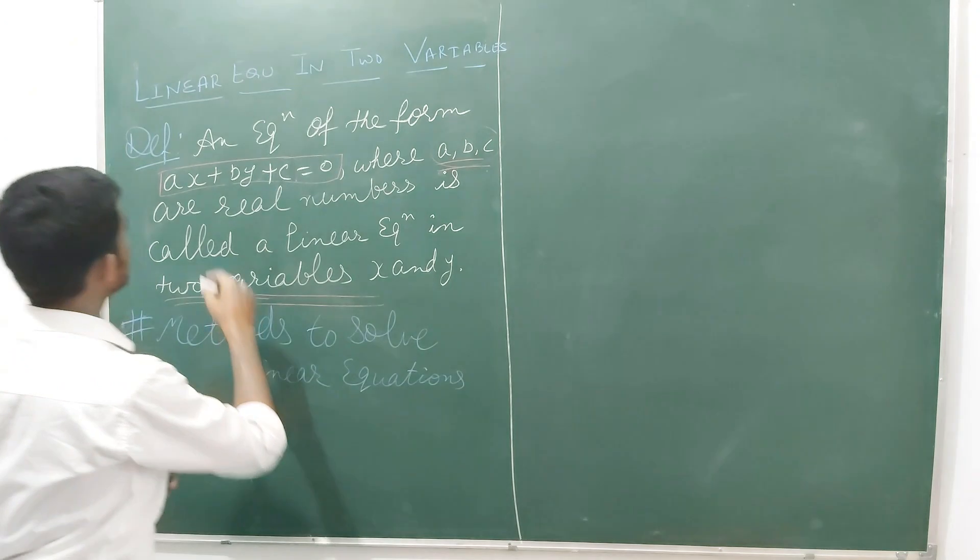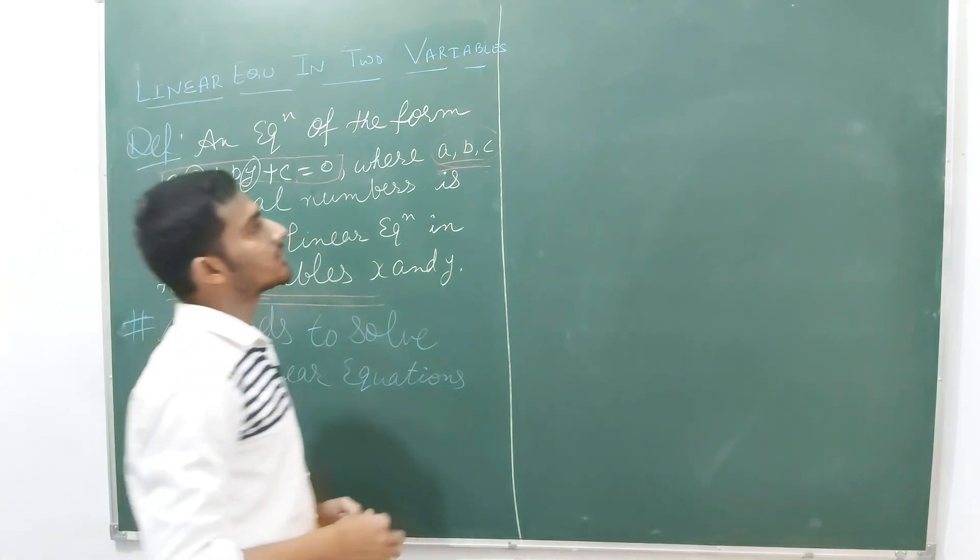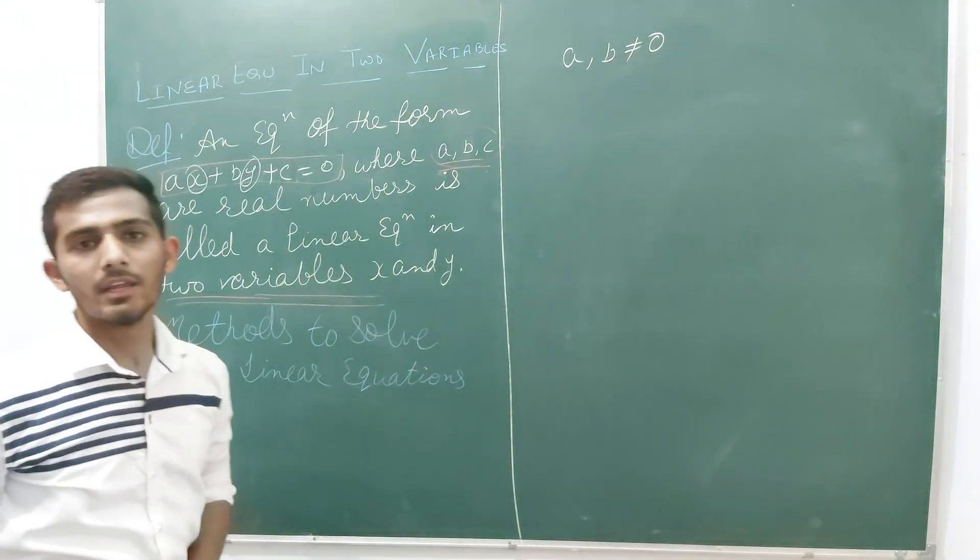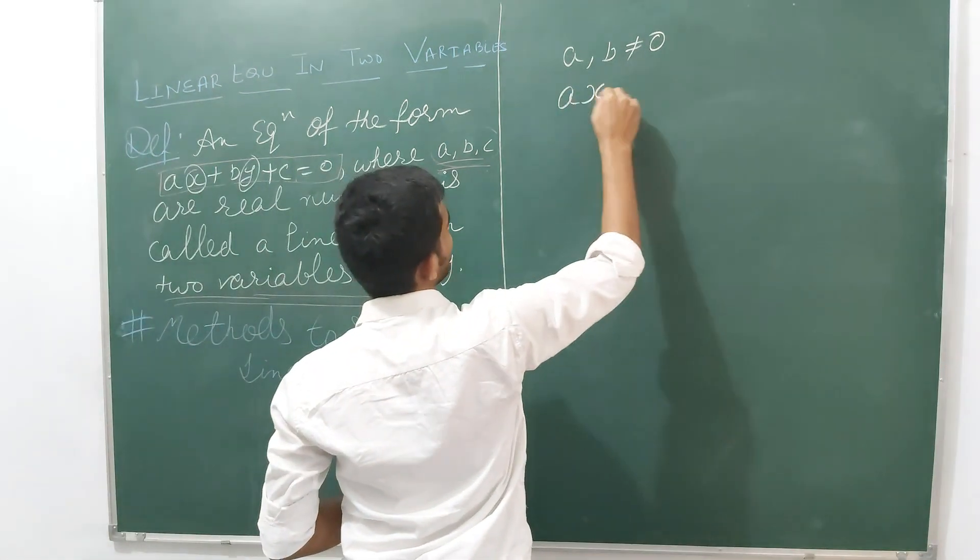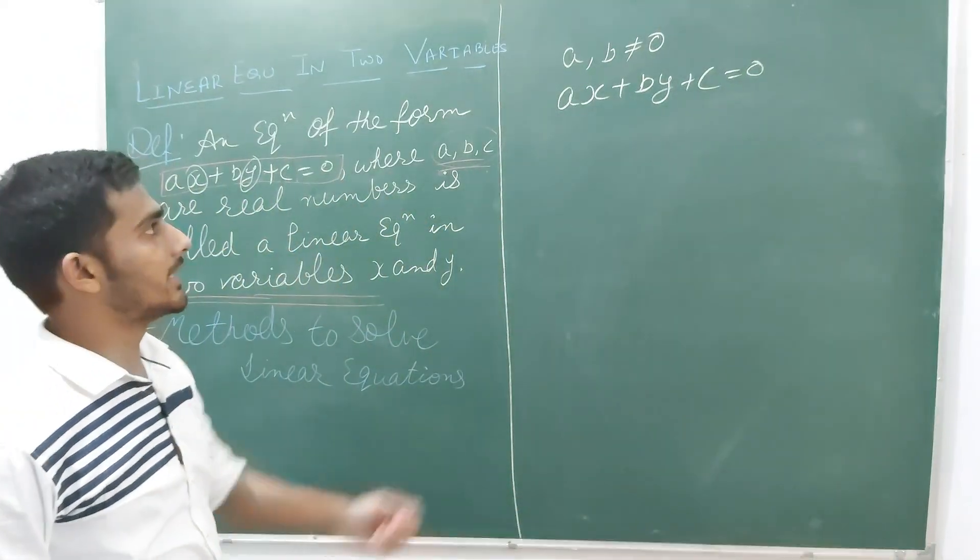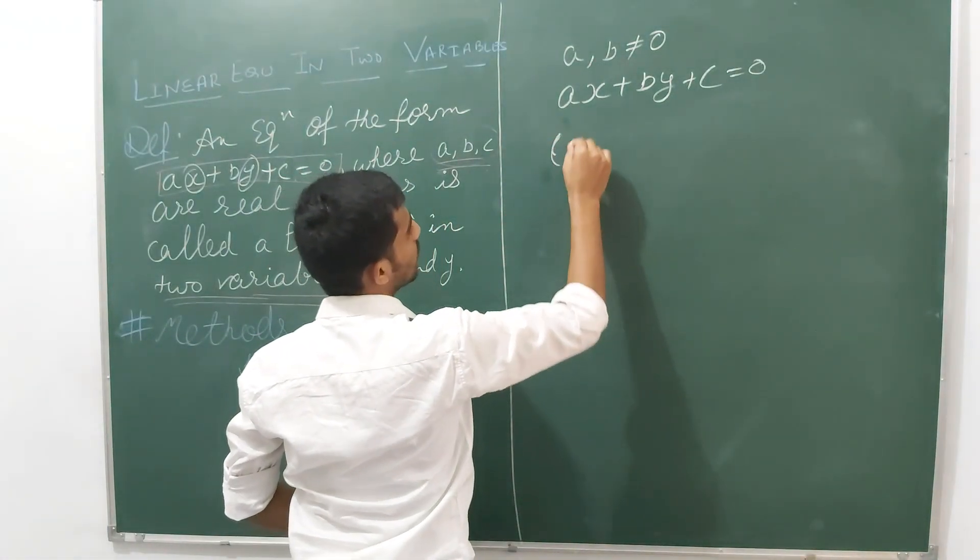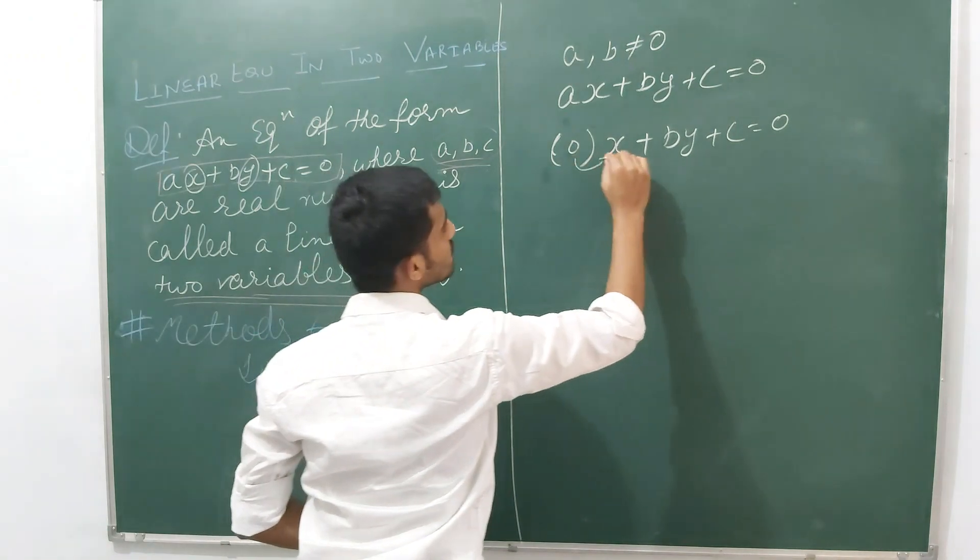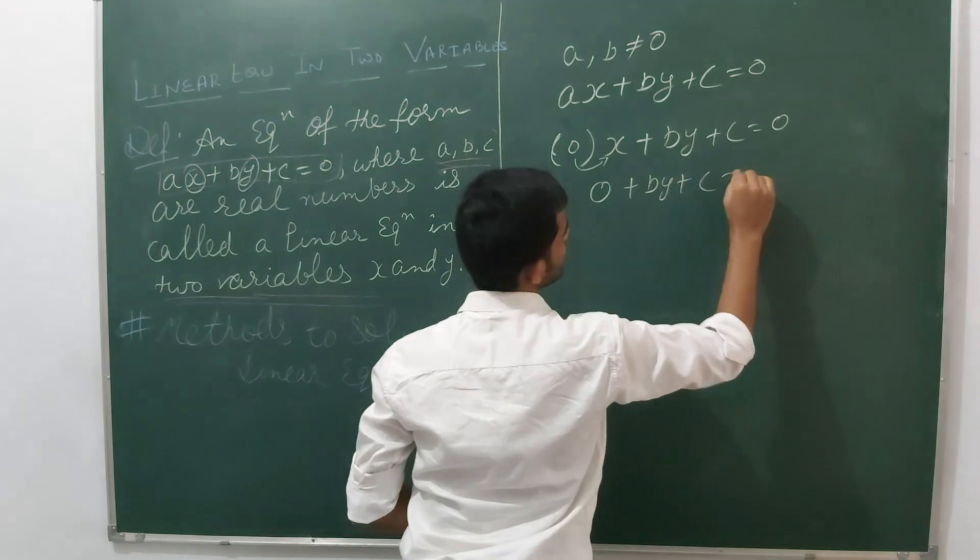Here we have two variables x and y, but there is a condition that a and b cannot both be zero. If a is zero and b is also zero, then ax plus by plus c equals zero becomes 0 times x plus 0 times y plus c equals zero, which gives us zero plus zero plus c equals zero.